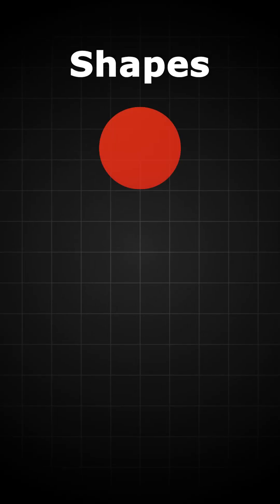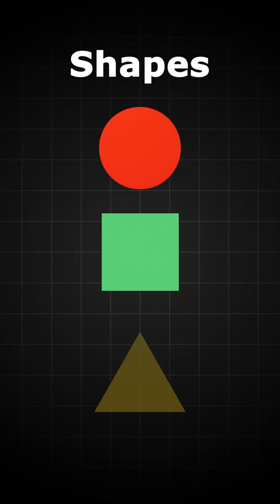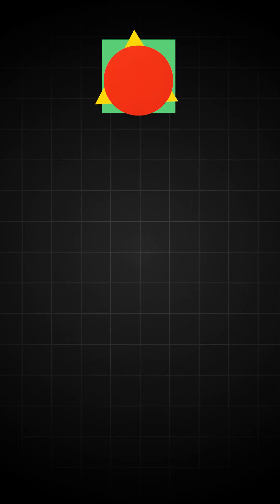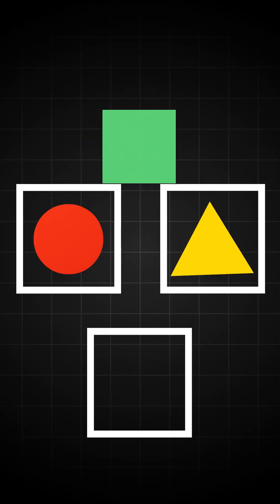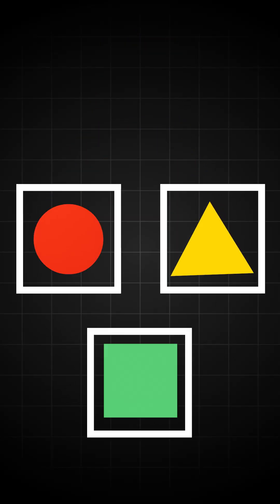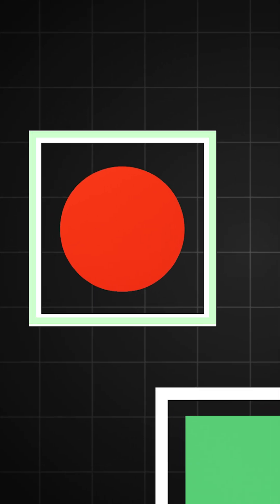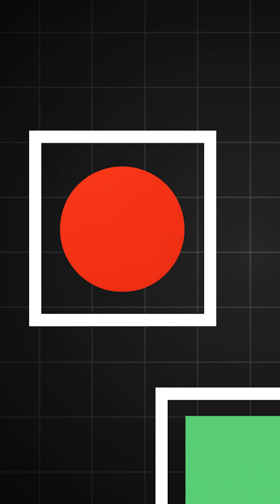For example, imagine a bunch of shapes — circles, squares, triangles — all in different colors. A clustering algorithm, like k-means, can group shapes together based on features like shape, color, or even both. It works by assigning shapes to clusters so that shapes in the same cluster are more similar to each other